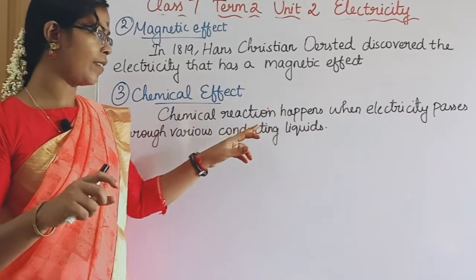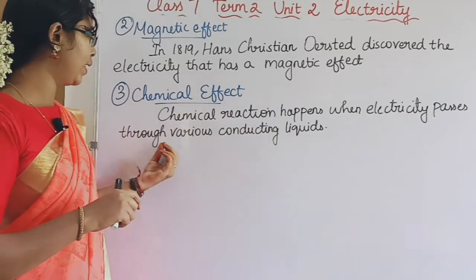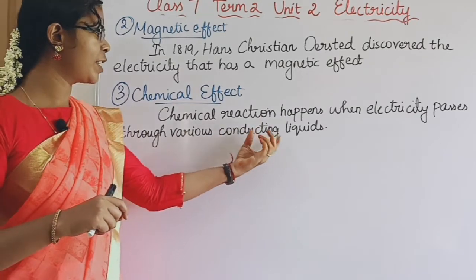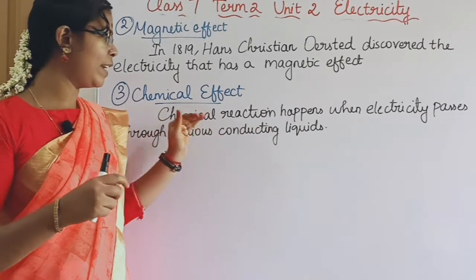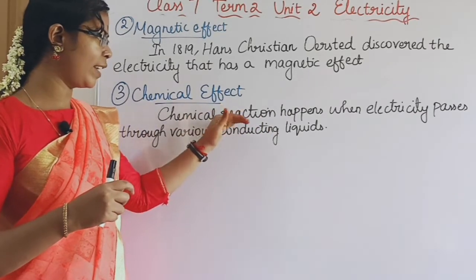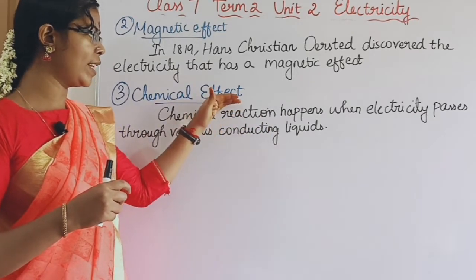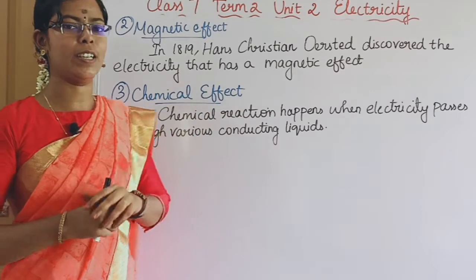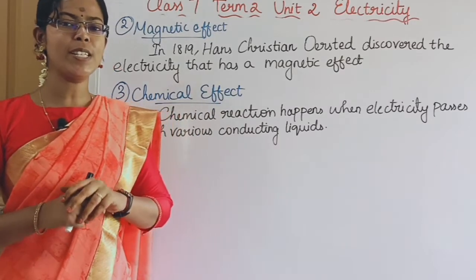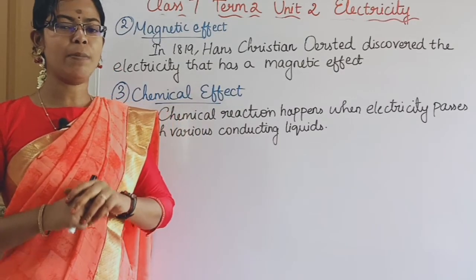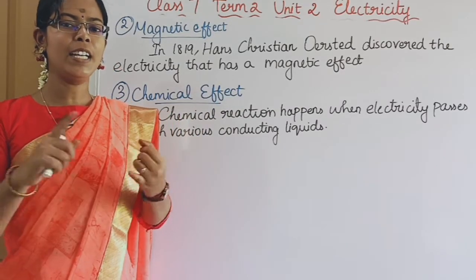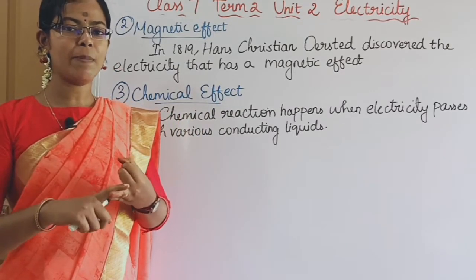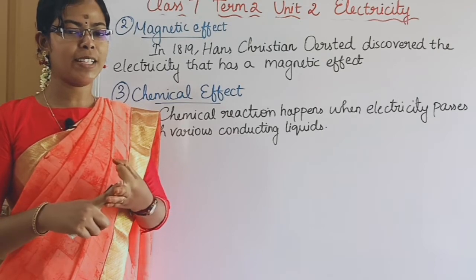The third effect is the chemical effect. When electricity passes through conducting liquids, a chemical reaction occurs. This is known as the chemical effect of electric current. To summarize, the effects of electric current are: the heating effect, the chemical effect, and the magnetic effect.